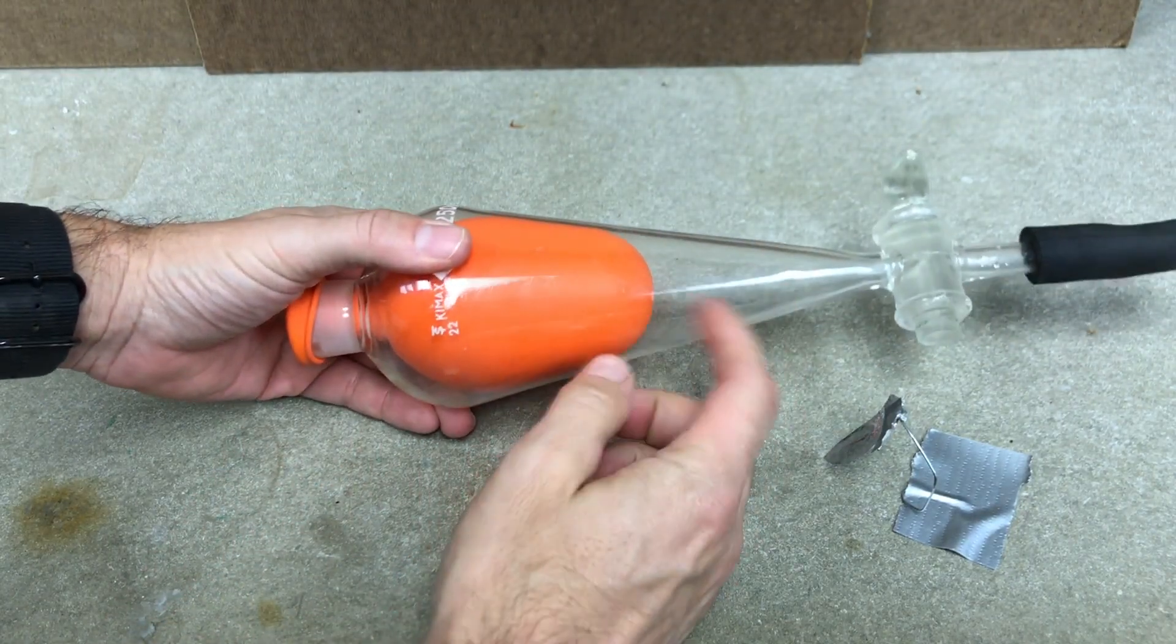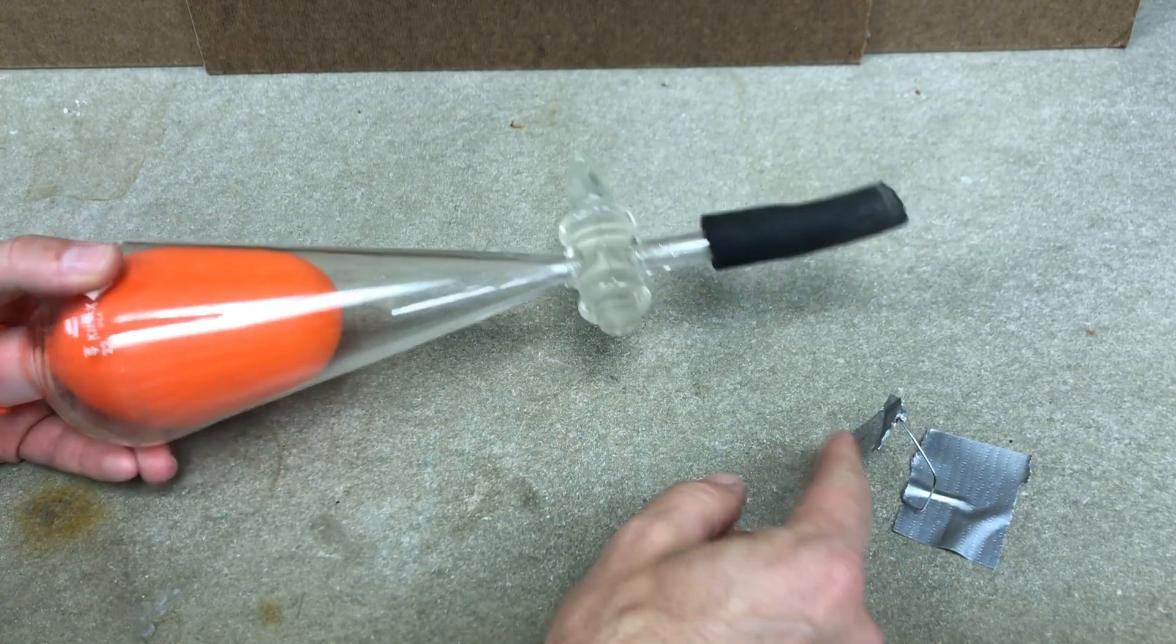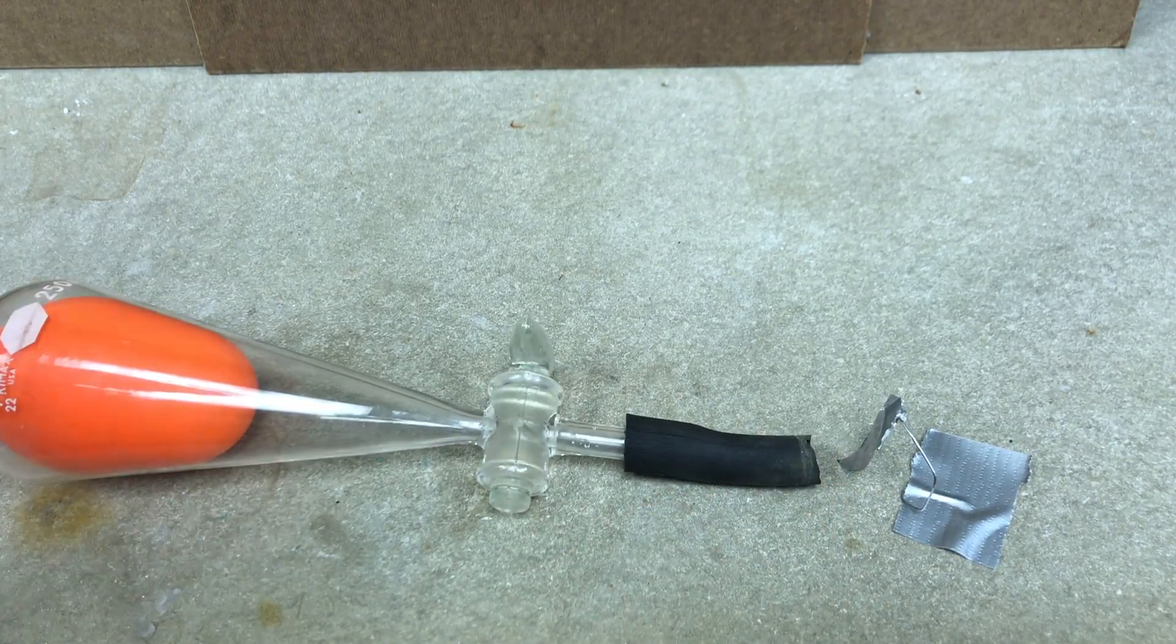So now this is an area of low pressure. Now instead of smoke or anything like that because you can't see it, I have this little flimsy piece of mylar. Let's lower this down so you can see that better.